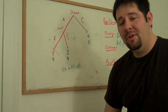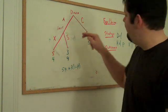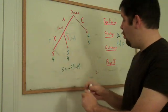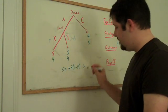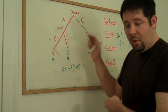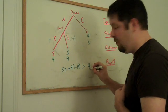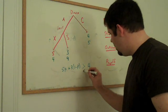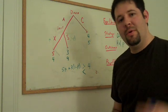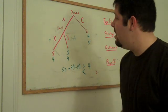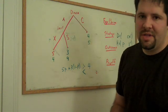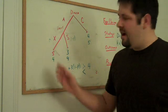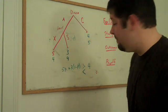When is it optimal for Draco to choose A versus choosing C? It's going to be optimal to choose A when this payoff from going down the A branch is bigger than 4. Or it's optimal to choose C and it is the other way around. Where P is bigger than 1 half, Draco will find it optimal to choose A in his strategy. But if it is less than 1 half, then Draco will find it optimal to choose C.